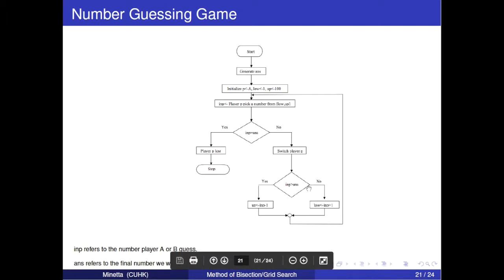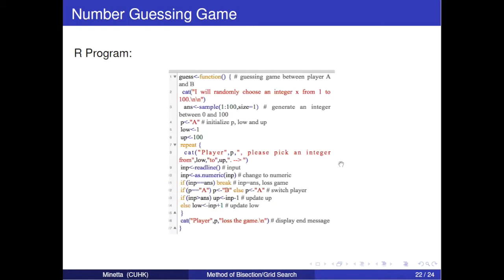Another application is number guessing game. Game starts. The computer will generate a number between 1 and 100. Then player A and player B take turns to guess the number. The rule is that if player P choose the number generated, he will lose the game. This game uses bisection search, but there are some changes. Those numbers are not compared with midpoint, but the random number player guessed in that interval. Here are the R program of the number guessing game. If you have interest in this game, you can type them down and play it yourself.